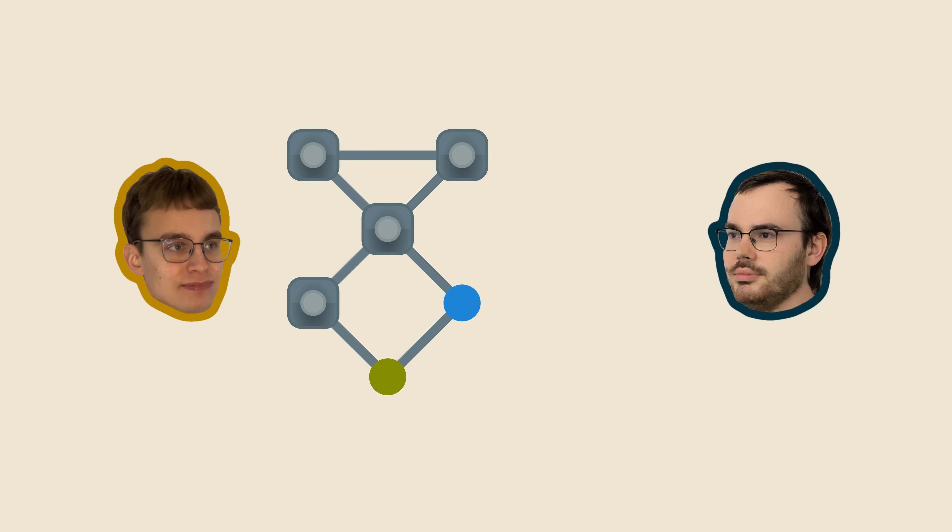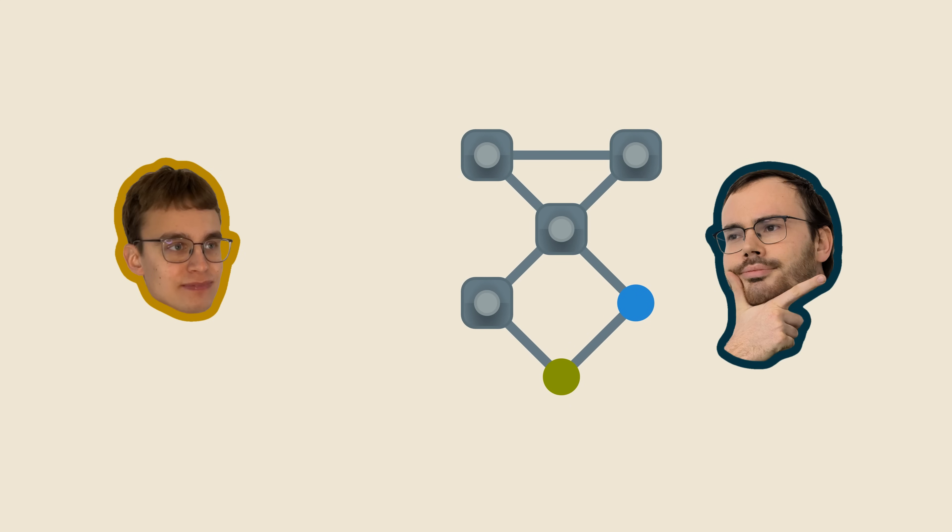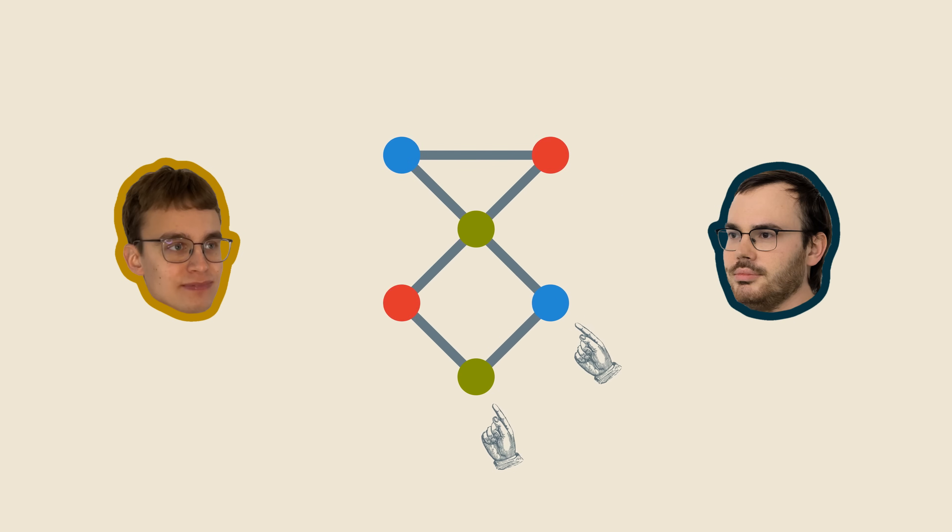It turns out that there is. Let's say that I hide all the colors in my solution except for these two and I only show the verifier these two colors. Has the verifier learned anything useful about my solution? Well, intuitively, not really. Yes, he now knows that these two nodes have different colors, but that's the case in any correct solution anyway. And whether I used red and blue or some other two colors is intuitively also irrelevant since the colors are interchangeable.